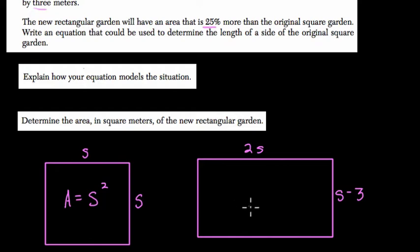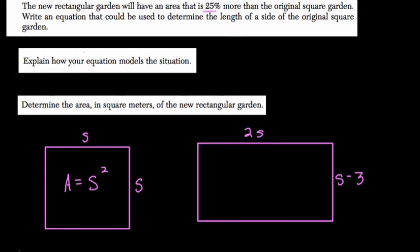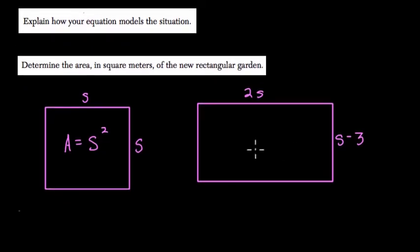Now we have a larger area that's 25% larger than the original. So whatever it was originally, it would be S squared plus 25% of S squared. So we do 25% or 0.25 times S squared, and that's what our new area is.